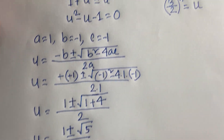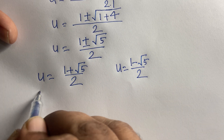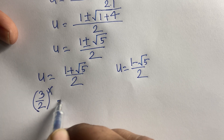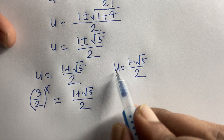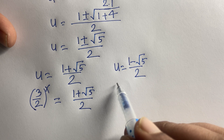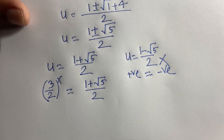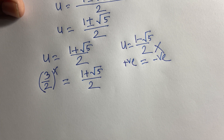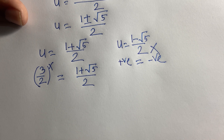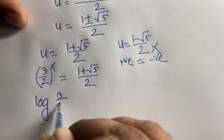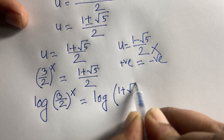Remember that u equals (3/2)^x. So (3/2)^x equals (1 plus √5) over 2, or (3/2)^x equals (1 minus √5) over 2. The left side is always positive, but (1 minus √5)/2 is negative, so a positive value cannot equal a negative value — we reject that case. We apply the natural log to both sides: ln((3/2)^x) equals ln((1 plus √5) over 2).